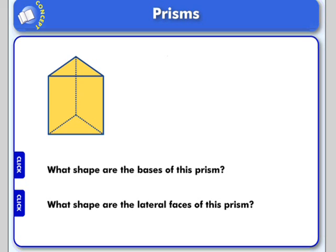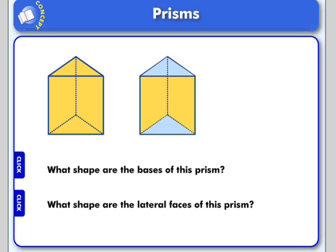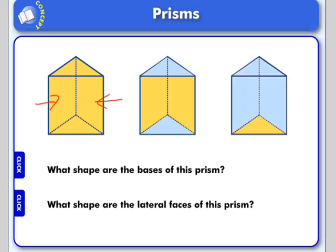Here we have a triangular prism, and the bases of the prism are both triangles, so we're going to have to use the formula for area of a triangle. If you look at the lateral faces of the prism — the faces that join the bases, like the sides — their shape is actually rectangles. So we'll also need the formula for area of a rectangle to find the surface area of a triangular prism.